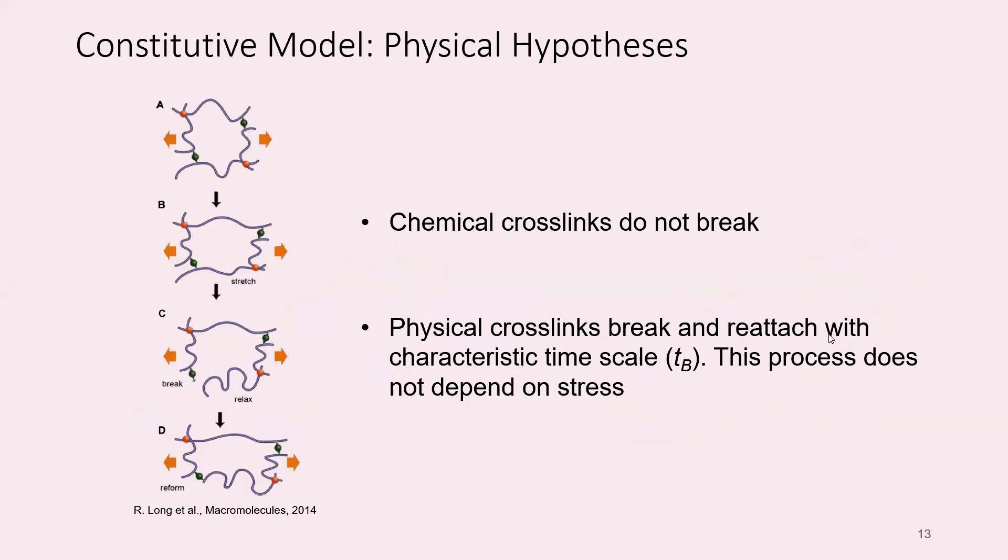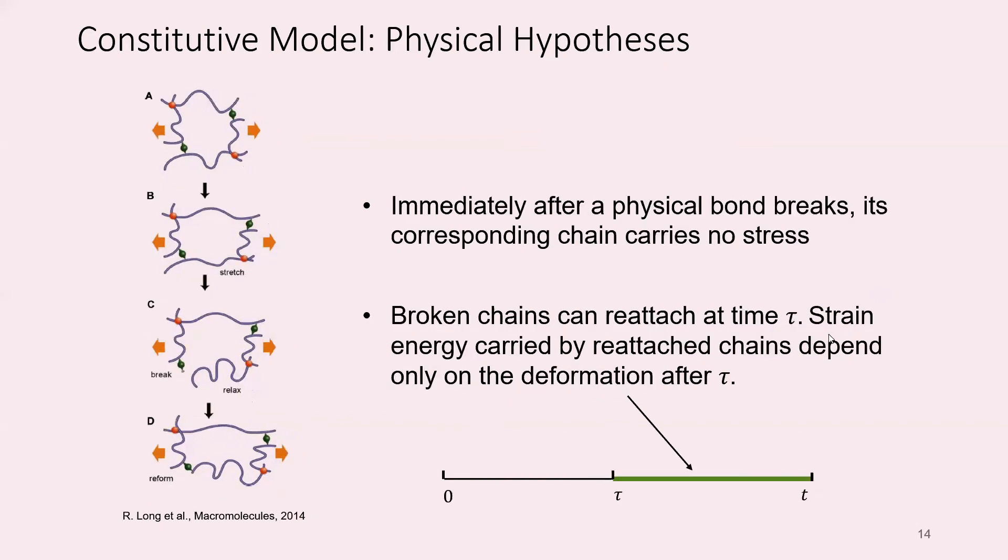The physical hypothesis underlying the constitutive model is that the physical crossings can break and reattach with a timescale T sub B. That timescale will be temperature dependent, faster at higher temperatures. In our model, that process does not depend on stress—it's basically a linear viscoelastic model. After a bond breaks and releases its energy, it will later reform at a time tau. The only energy that accumulates is from the current time T to the time that it reattached, tau. We'll see a convolution integral term in the constitutive behavior reflecting that breaking and reforming.